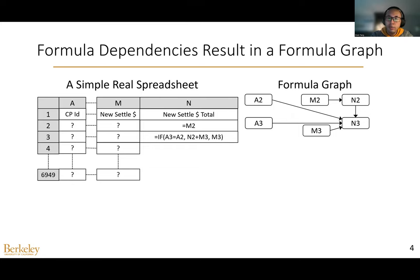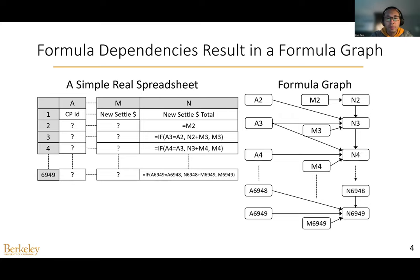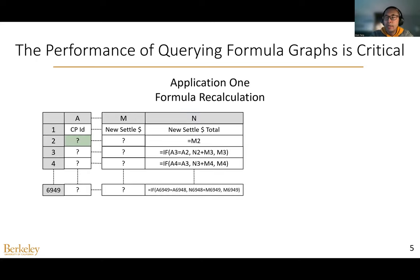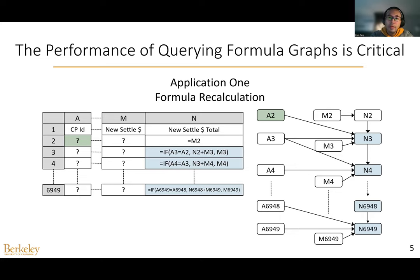N3 takes A2, A3, N2, and M3 as input, so the corresponding dependencies are added to the formula graph. Other dependencies are added in the same way. Formula graphs are widely adopted in several spreadsheet applications, and the performance of querying the formula graph is critical to the interactivity of spreadsheets. One example application is formula recalculation: if the user modifies the value of a cell, the system needs to find all formulas that depend on that cell and recalculate them. Therefore, finding dependents of a cell is critical to the performance of processing cell updates.